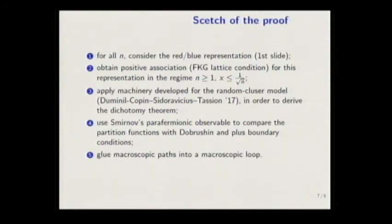And then for this representation, you can show that in a certain regime of parameters for n at least one and x below 1 over root n, there is the FKG inequality, meaning that there is a positive association. So if, let's say, given that one hexagon is red, probability that the other one is red is increasing. It's bigger than the probability that the second is red given that the first was blue. Or you can formulate it in terms of increasing events. And this puts us in the setup of random cluster model, where it was recently proven by Hugo Duminil-Copin, Sidoravicius, and Tassion that there is a dichotomy theorem, the same as I stated before, but for the random cluster model.